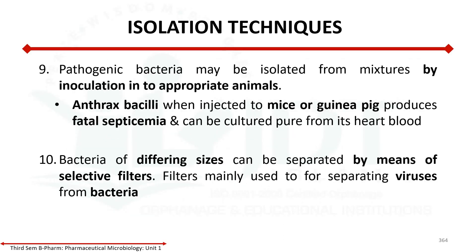Next is isolation by inoculating into appropriate animals. For example, if we need to separate an organism that causes a specific disease and we have an unknown sample, we can inject the material — such as an anthrax bacillus sample — and then separate the specific microorganism from it.